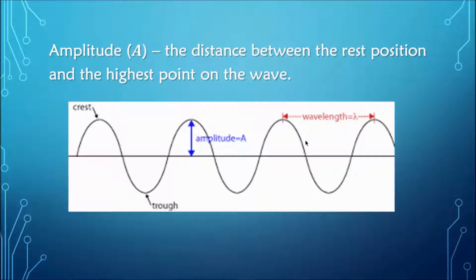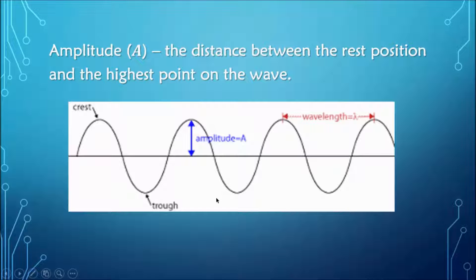Amplitude is defined as the distance between the rest position and the highest point on the wave. The rest position is our reference, and amplitude is the distance from that rest position up to the highest point on the wave. It can also be considered as the distance between the rest position and the lowest point on the wave.